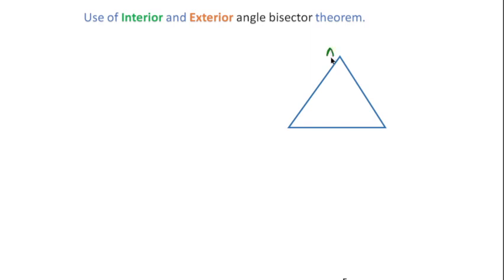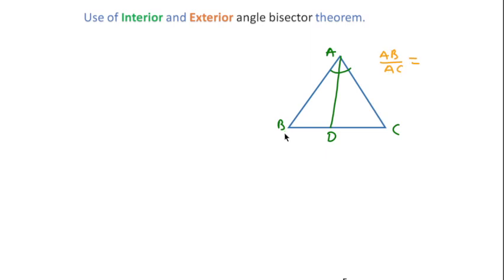Let's suppose this is a triangle ABC and AD is the angle bisector. According to the interior angle bisector theorem, the ratio of AB to AC is equal to the ratio of BD to CD. This is the interior angle bisector theorem — let me prove how this relation comes about.